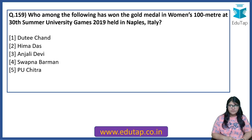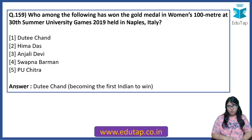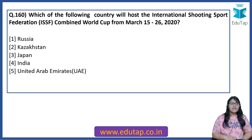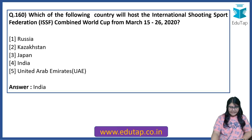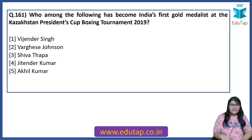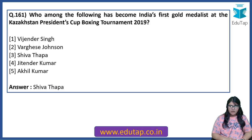Who among the following has won the gold medal in women's 100 meter at the 30th Summer University Games 2019 held in Naples, Italy? The answer is Dutee Chand, becoming the first Indian woman to win this particular medal. Which country will host the International Shooting Sport Federation Combined World Cup from March 15 to 26, 2020? The host is India. Who among the following has become India's first gold medalist at the Kazakhstan President's Cup Boxing Tournament 2019? The answer is Shiva Thapa.